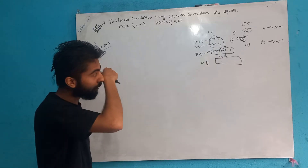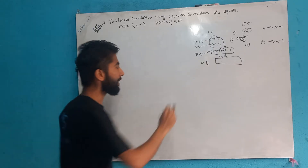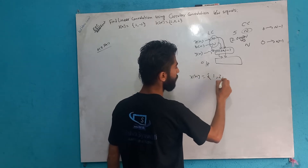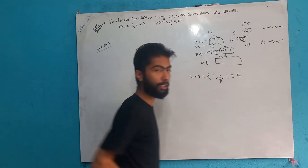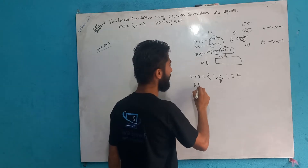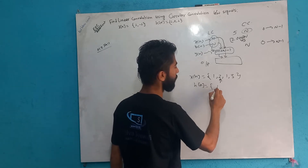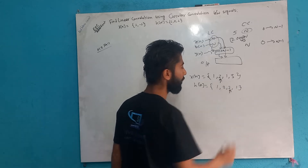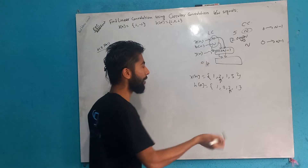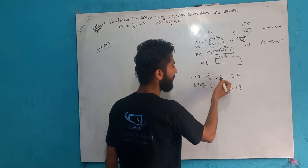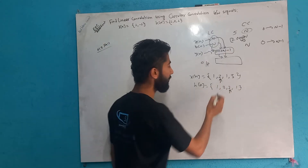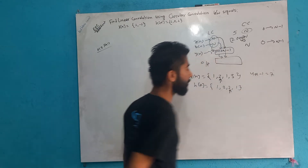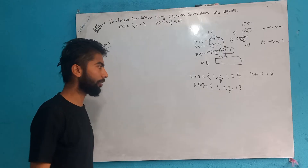How does the index position work? Suppose this is the value: 1, 2, 1, 3. This is the index position. And this value is 1, 2, 2, 1. So this is the index position: 1, 2, 3, 4 and 1, 2, 3, 4. So 4 plus 4 minus 1 equals 7 output index positions, from 0 to 6. Okay.